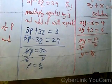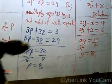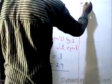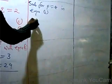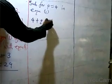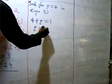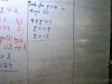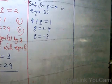Now I substitute p equals 4 into equation 1. I have 4 plus q equals 1, so q equals 1 minus 4, which gives q equals minus 3.